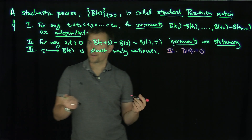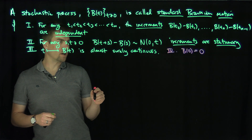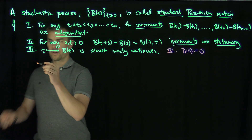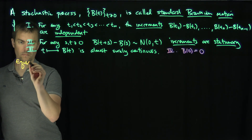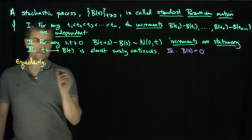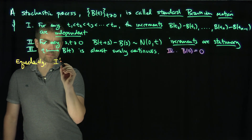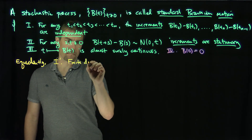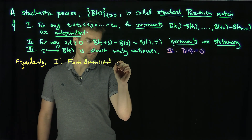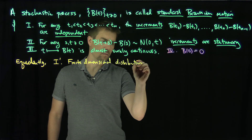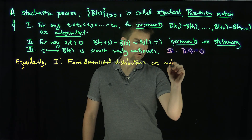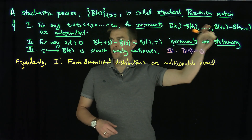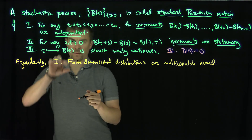From these conditions, we get a couple of observations. There's an equivalent formulation. Equivalently, you can replace condition one with condition one prime, which says that the finite dimensional distributions are multivariate normal. This will basically match up with conditions one and two.